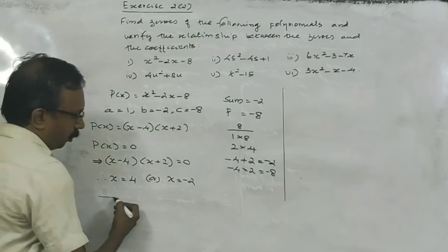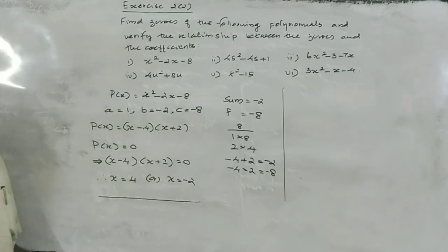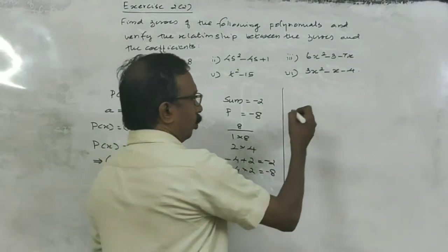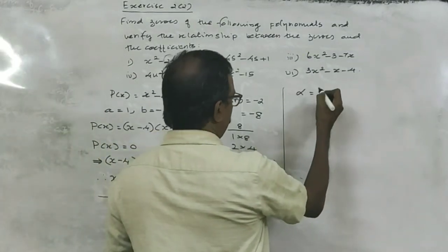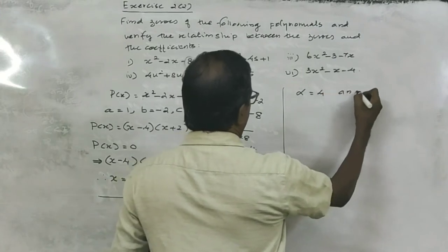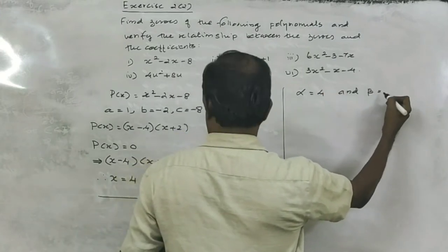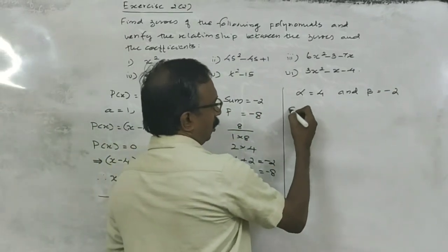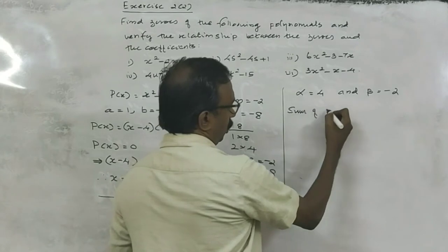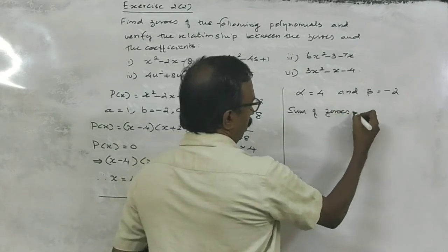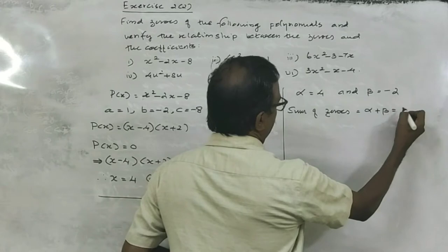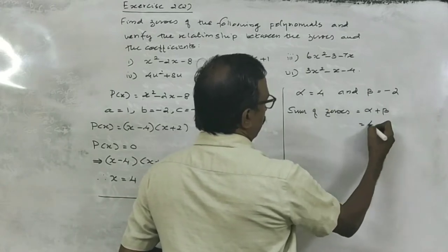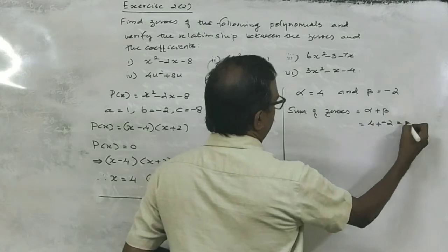Therefore, the zeros of this polynomial are 4 and minus 2. Now, let me take each zero of the polynomial as alpha equal to 4 and beta equal to the second zero, that is minus 2. Sum of zeros: alpha plus beta is 4 plus minus 2, that is 2.